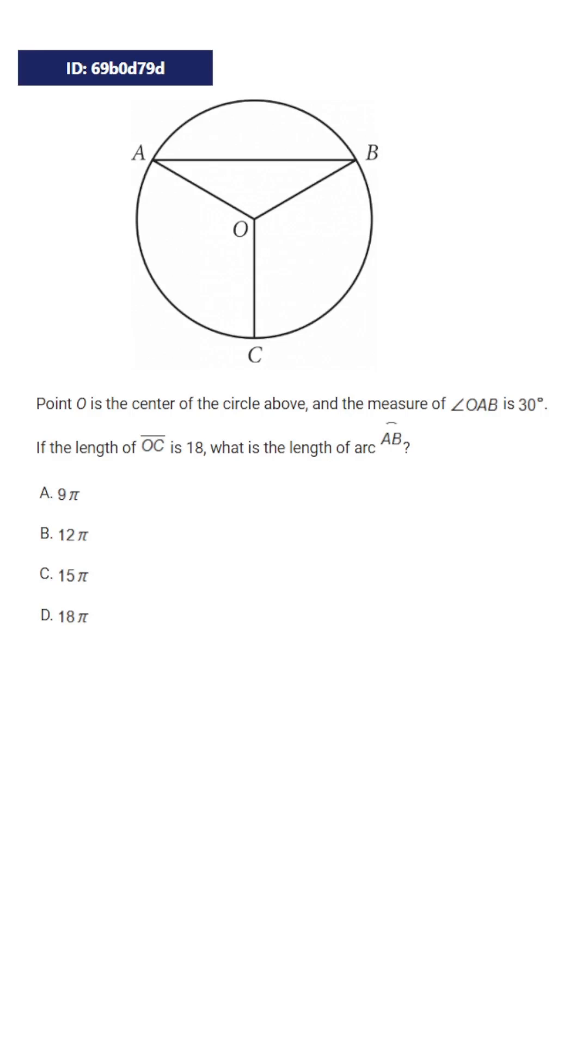Let's take a look at this question. We're told point O is the center of the circle above and the measure of angle OAB is 30 degrees. We're then asked if the length of OC is 18, what is the length of arc AB?